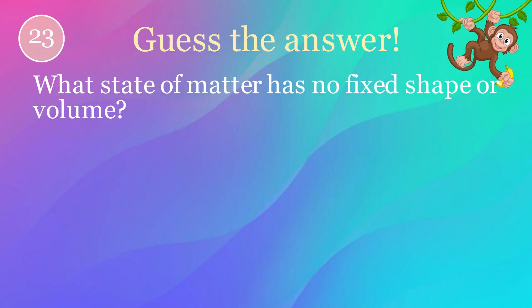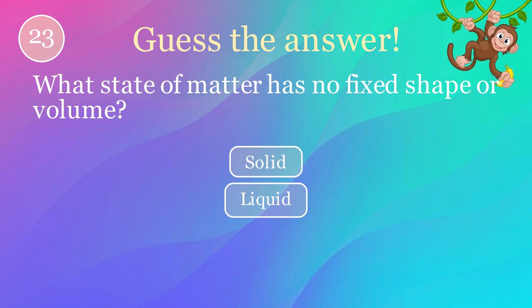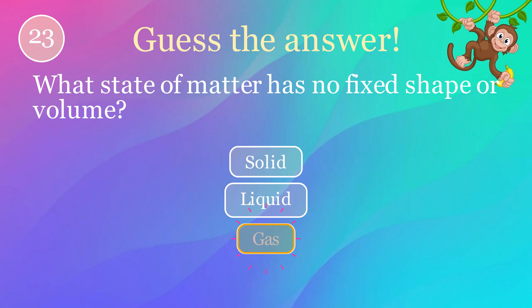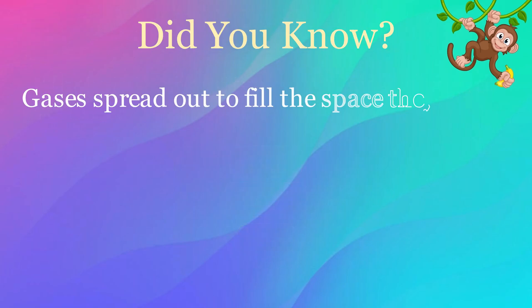What state of matter has no fixed shape or volume? Options: solid. The correct answer is gas. Here's an interesting fact: gases spread out to fill the space they are in.